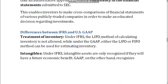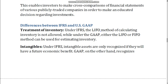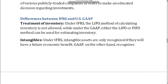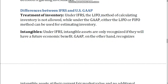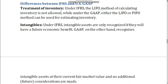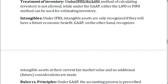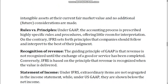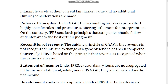Differences between IFRS and US GAAP. Treatment of Inventory: under IFRS, the LIFO method of calculating inventory is not allowed, while under GAAP, either the LIFO or FIFO method can be used for estimating inventory. Intangibles: under IFRS, intangible assets are only recognized if they will have a future economic benefit. GAAP, on the other hand, recognizes intangible assets at their current fair market value, and no additional future considerations are made.